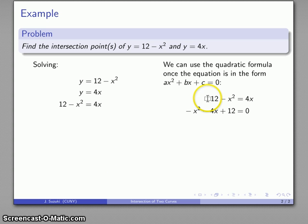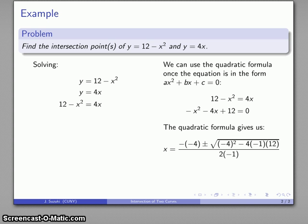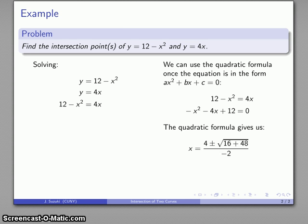And notice I don't really care that this coefficient of x squared is negative. The quadratic formula doesn't care what the value of a, b, or c is, as long as a is not equal to 0. So I apply the quadratic formula and I get the following solution. And after all the dust settles, I get the solution x equals negative 6 or 2.